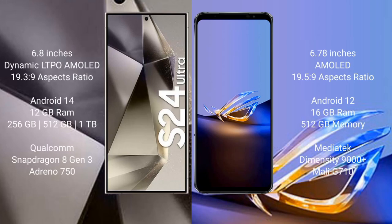Galaxy S24 Ultra comes with a 6.8-inch Dynamic LTPO AMOLED display. Asus ROG Phone 6D Ultimate comes with a 6.78-inch AMOLED display. Samsung Galaxy S24 Ultra runs on Android 14, while Asus ROG Phone 6D Ultimate runs on Android 12.